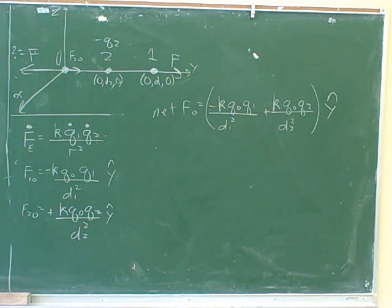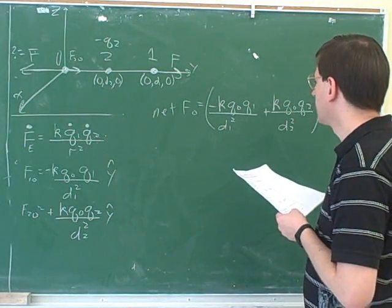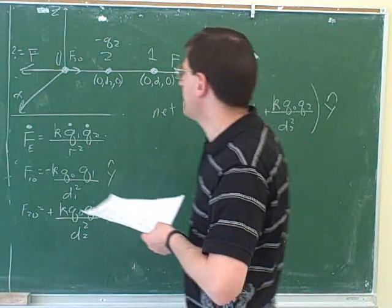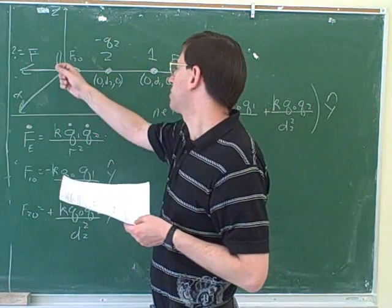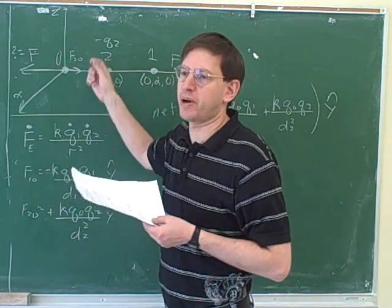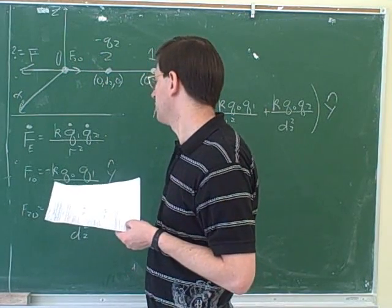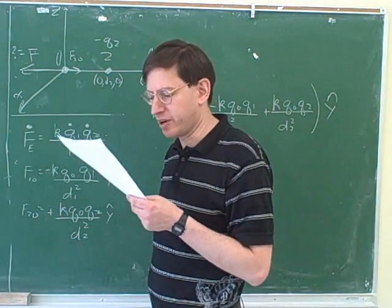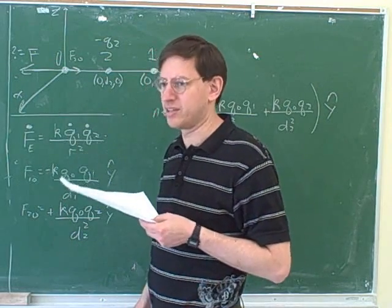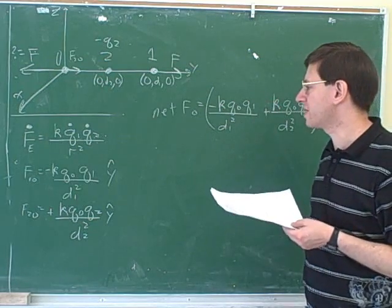We factor out the y-hat and we have to make sure we're including the signs. Why didn't we have to break these into components? Because they're all along the same axis. We didn't have to break these into components in order to add them because they were already parallel. It's only when the forces are not parallel that we have to break them into components. The key thing that would be easy to forget here is the signs.